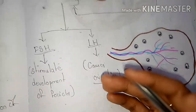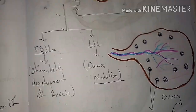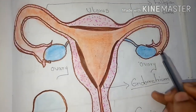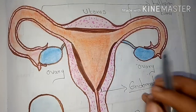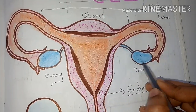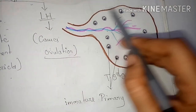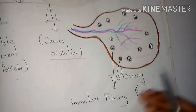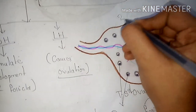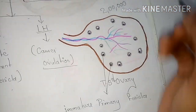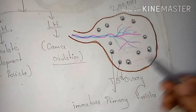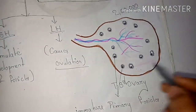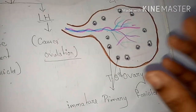Now we are going to see the cross-section of the ovary and what follicles are mainly present in it. This is the cross-section of the ovary, which is present in the female reproductive system. Each ovary contains about two lakh immature primary follicles.